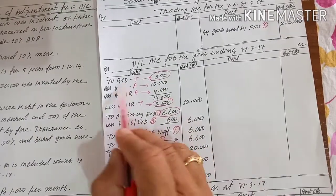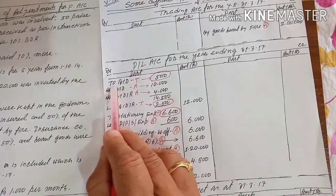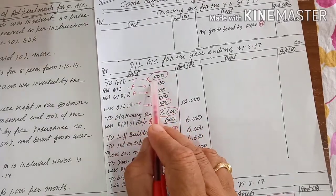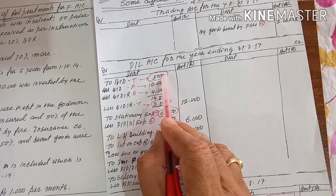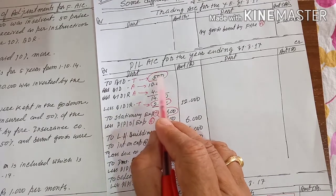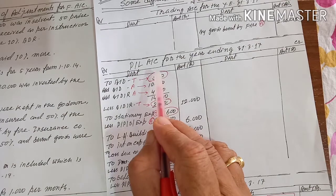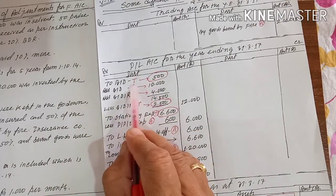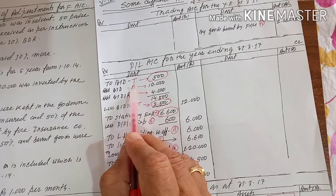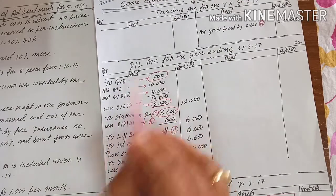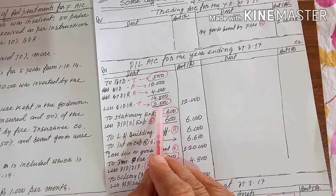Bad debt — all of you know this is the profit and loss account debit side for bad debt. The circle I made in red — that is the amount you got from the trial balance, and against that I wrote T. The amount against which I wrote A — that you got from the adjustment. This is the bad debt posting.